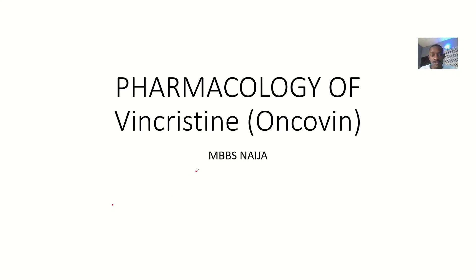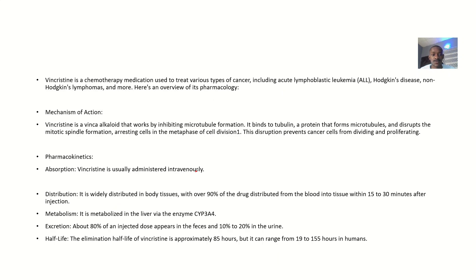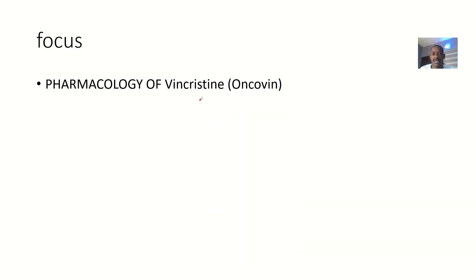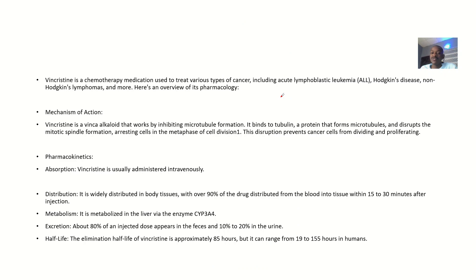For the next drug of choice, we'll look at a chemotherapy medication known as vincristine. Vincristine is mostly sold under the brand name Oncovin — relating to oncology. It is a chemotherapy drug used to treat some types of cancers, which we'll get to look at.